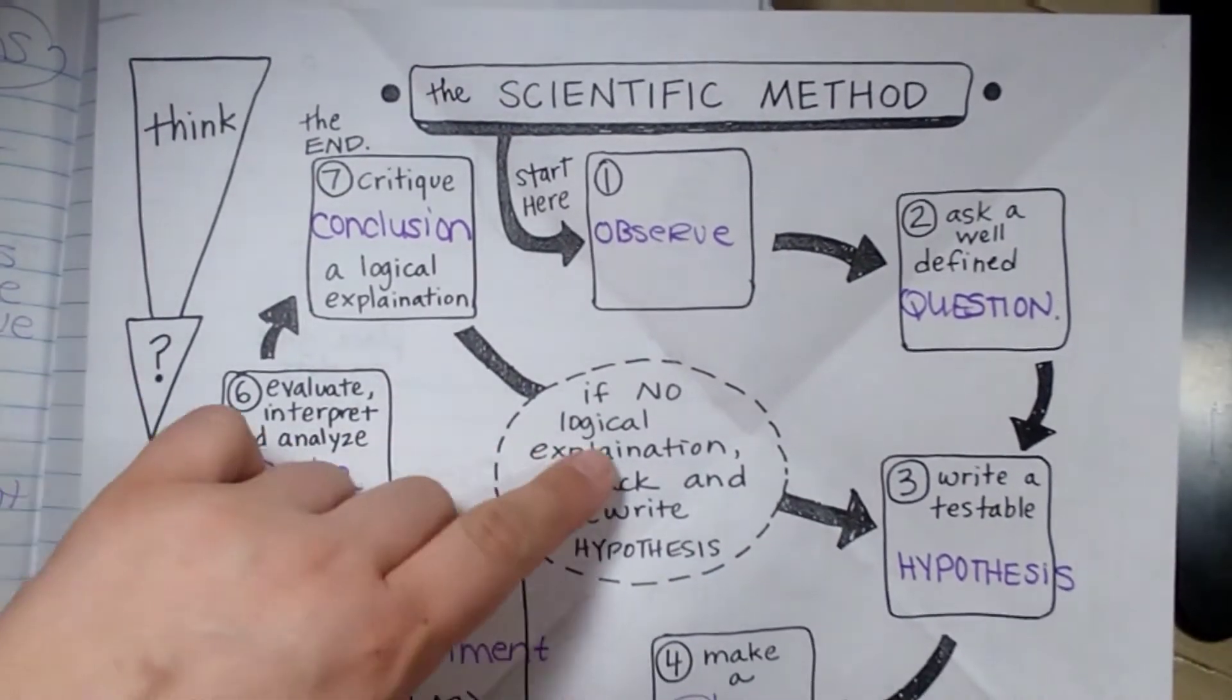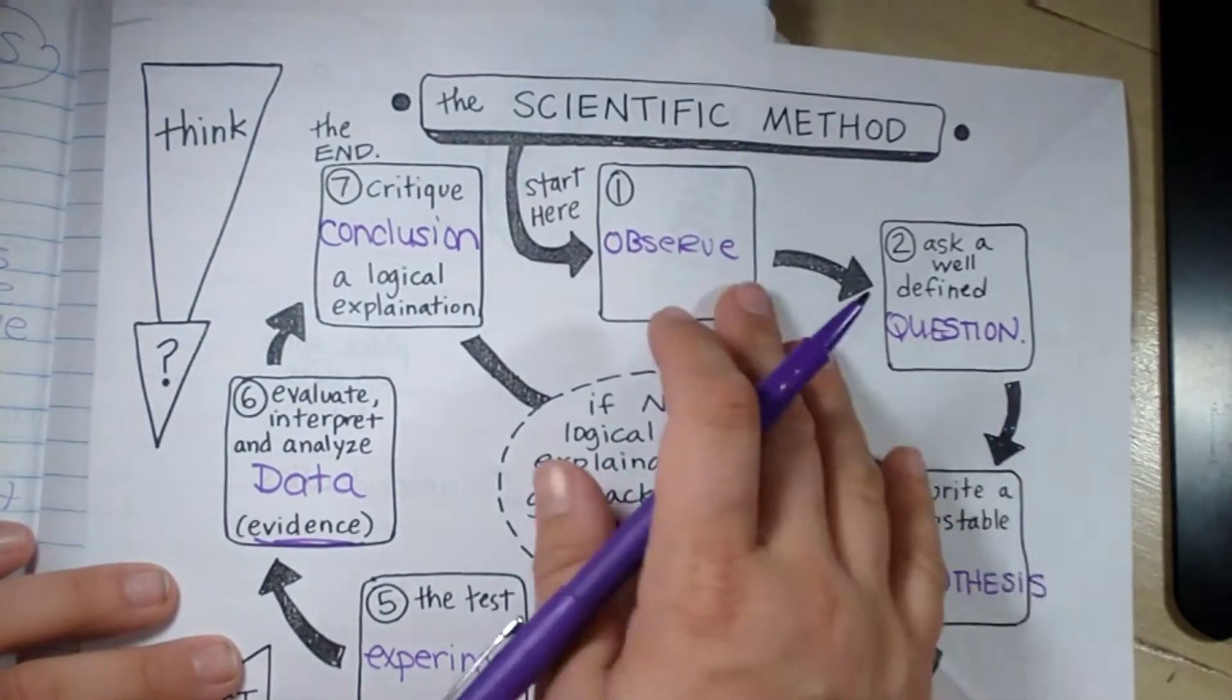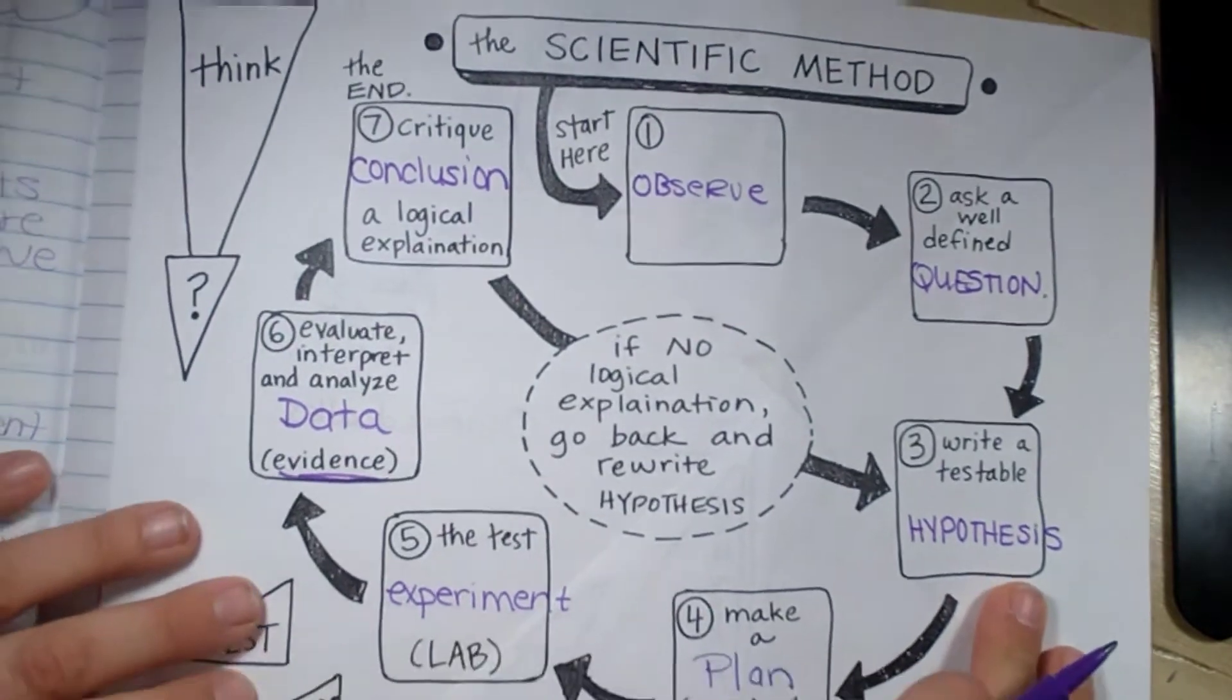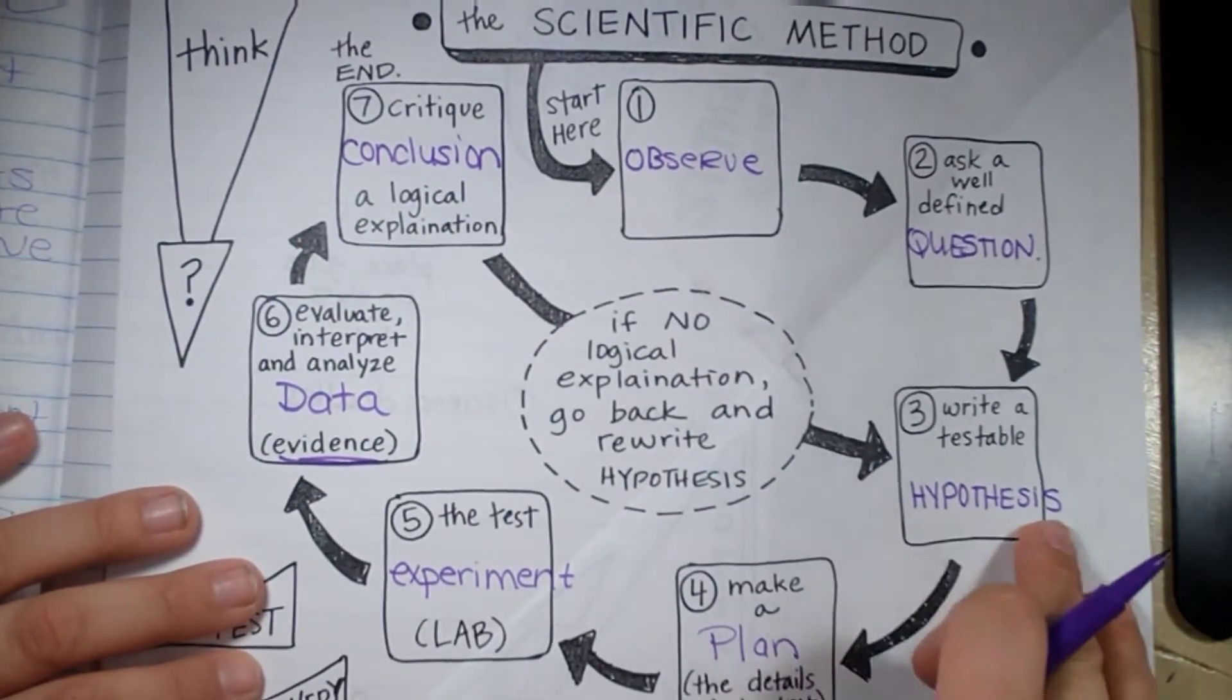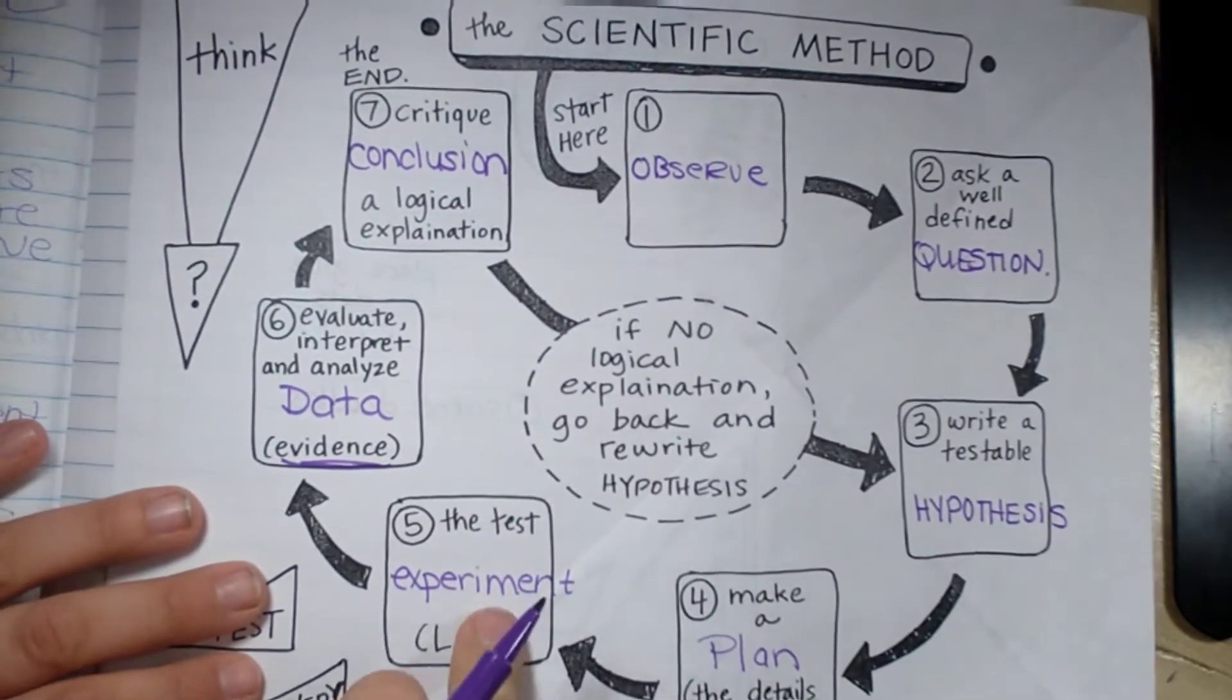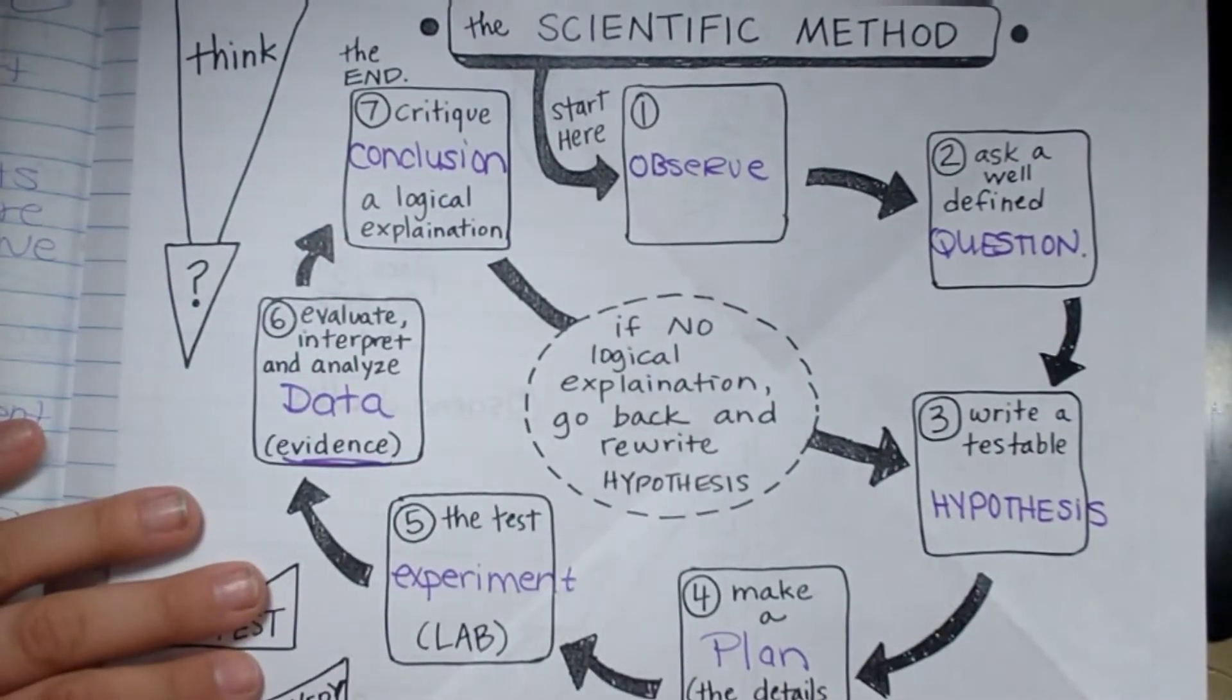That is our scientific method. We observe, we question, create a question about what we observe. We create a hypothesis, which is our question answered. What do we think the answer to the question is? Then we're going to make a plan on how we're going to test it. Then we actually test it. We collect data and draw a conclusion based on that data.